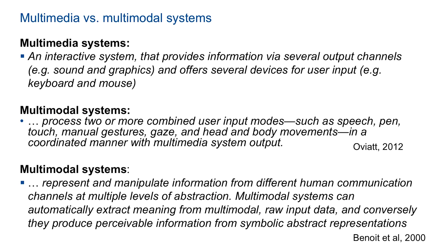So let's start with some real definitions here. Multimedia systems are interactive systems that provide information via several output channels, for example sound and graphics, and offer several devices for user input, for example keyboard and mouse.